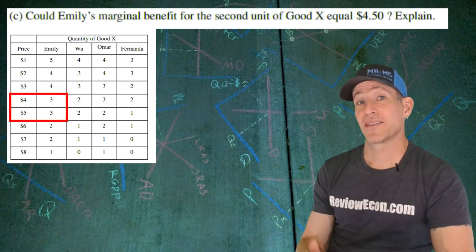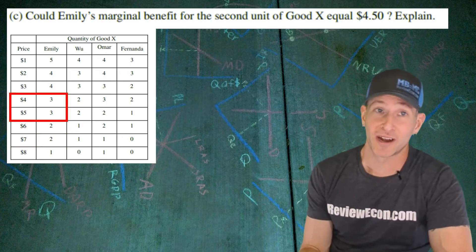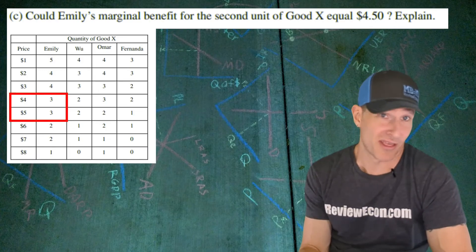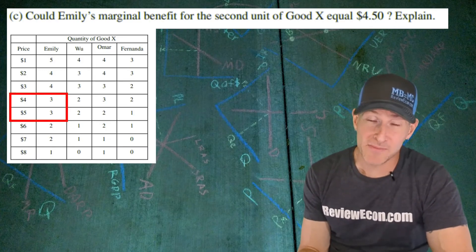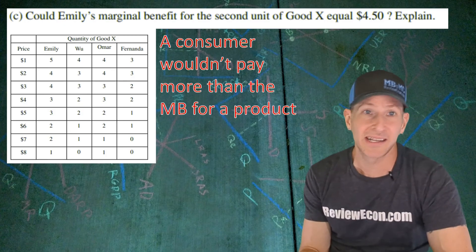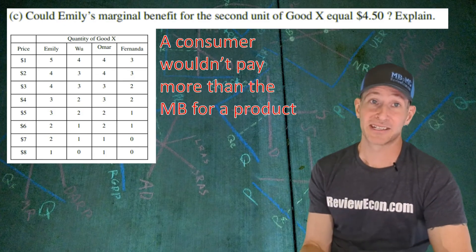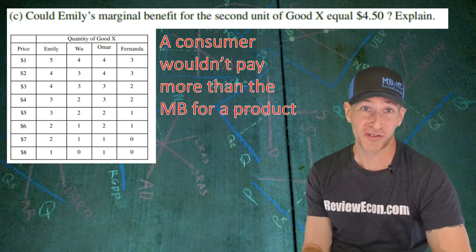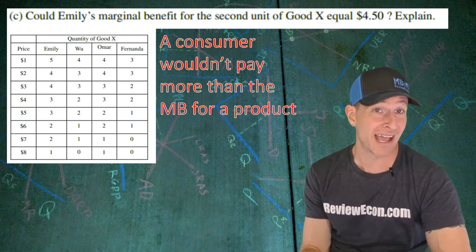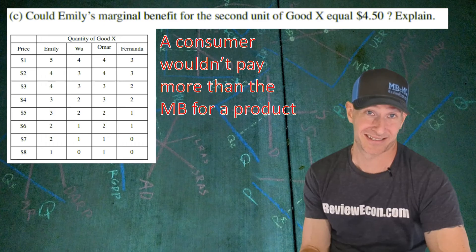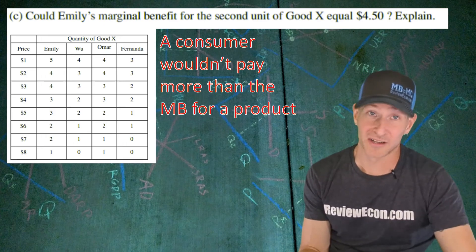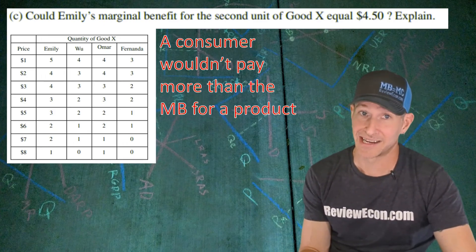But if you look over at $4.50 between $4 and $5, she is willing to purchase three units there. And we have to remember that the marginal benefit of a Good X is always going to be at least as much as somebody is willing to pay for that good. And since Emily is willing to pay $7 for two units, that means she values that second unit at least $7. But less than $8 since she's only willing to purchase one at $8.